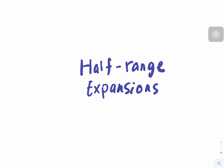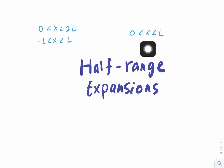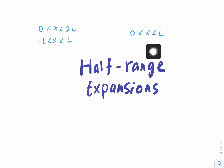In a Fourier series, we also have the half-range Fourier series. This is called the half-range Fourier sine series or half-range Fourier cosine series. Previously, we have seen the Fourier series where the interval is from zero to 2L, or from negative L to L. But in a half-range Fourier series, the interval is from zero to L, which means the interval is half of the normal Fourier series.